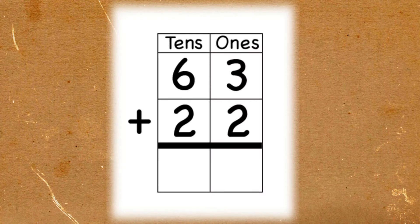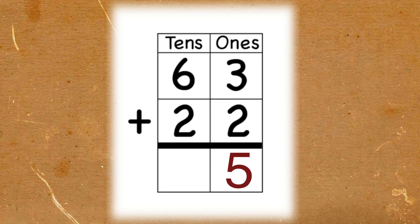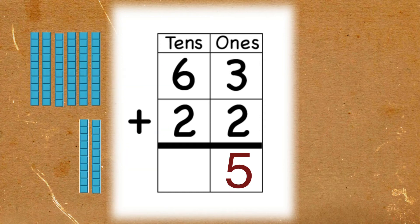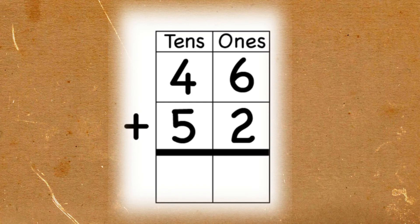The first problem is 63 plus 22. Remember, we should always begin in the ones place. 3 plus 2 is equal to 5. Now let's go to the tens place. What is 6 plus 2? 6 plus 2 is equal to 8. The final answer is 85. Now let's go to the second problem.